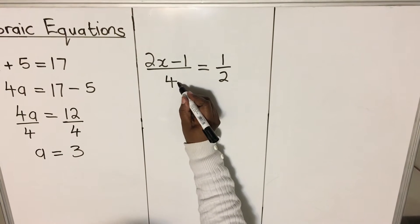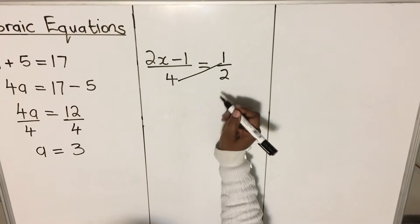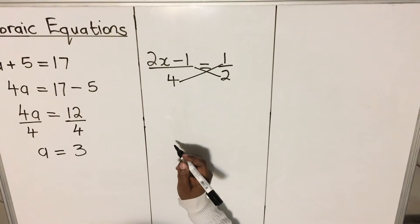What we do, we take the denominator from this side, multiply it with a numerator, and take the denominator this side, multiply it with a numerator.